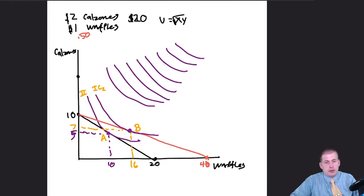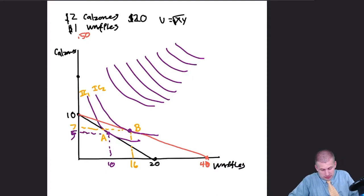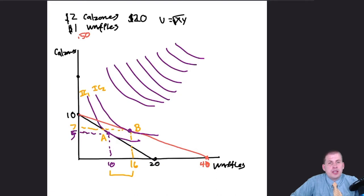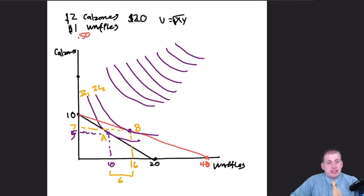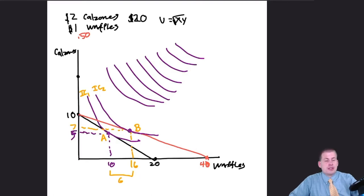We're on a higher indifference curve at a higher level of utility, so we are happier now. The total effect of lowering the price of waffles changed our consumption — we went from 10 to 16 waffles. So the total effect is 6 waffles. Cutting the price of waffles in half has a total effect of consuming 6 more waffles.